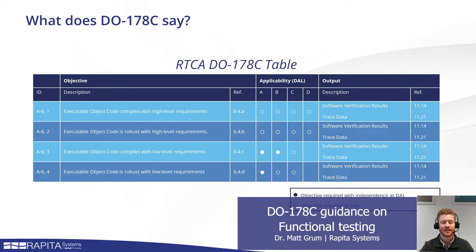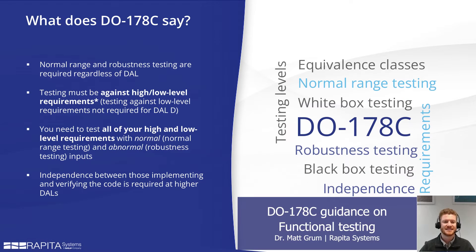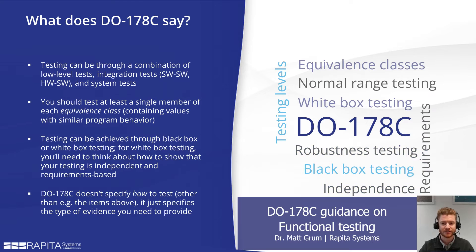So what does DO-178C say? Well, it has a lot of tables such as this. This is essentially giving the breakdown of what you have to do for different design assurance levels. The design assurance level roughly corresponds to how critical a component is.